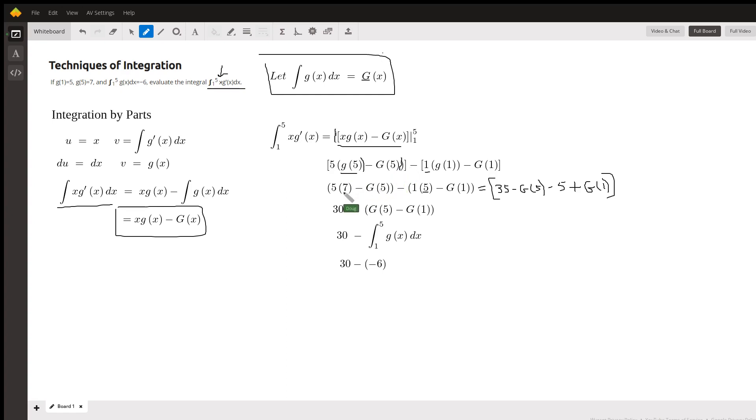Okay, calculating this: 35 minus g(5) minus 1 times g(1). There's a 35 minus 5. Removing these parentheses, this becomes plus G(1). 35 minus 5 is 30 minus.